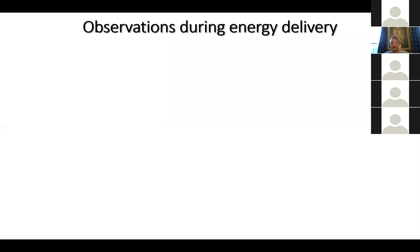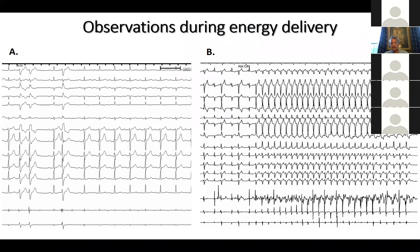Once you get to the earliest site and you're sure about that being the earliest location, during power application you can see a couple of things. In some cases, as in panel A, you see the clinical PVC, you come on ablation at the earliest site, and almost immediately there is abolishing of the clinical arrhythmia. Our approach is to continue applying power there for 60 to 90 seconds, and then give a few more lesions in that spot, which is oftentimes necessary to get an effective lesion.